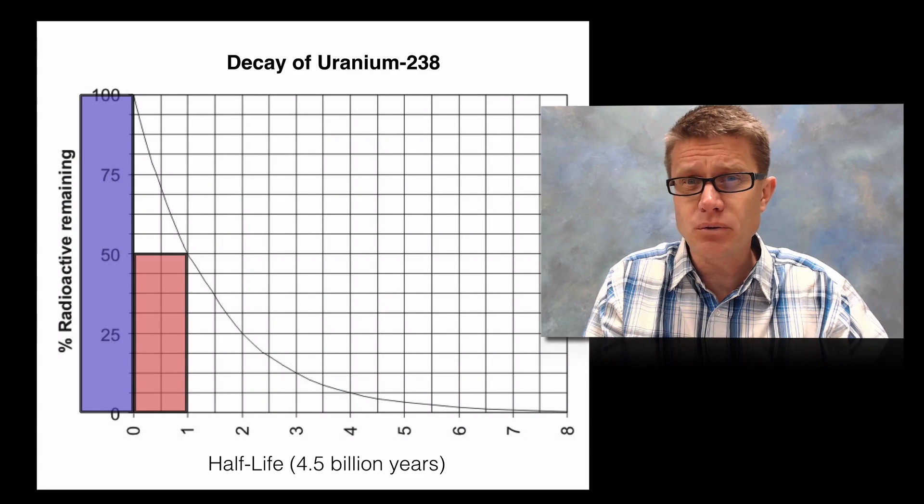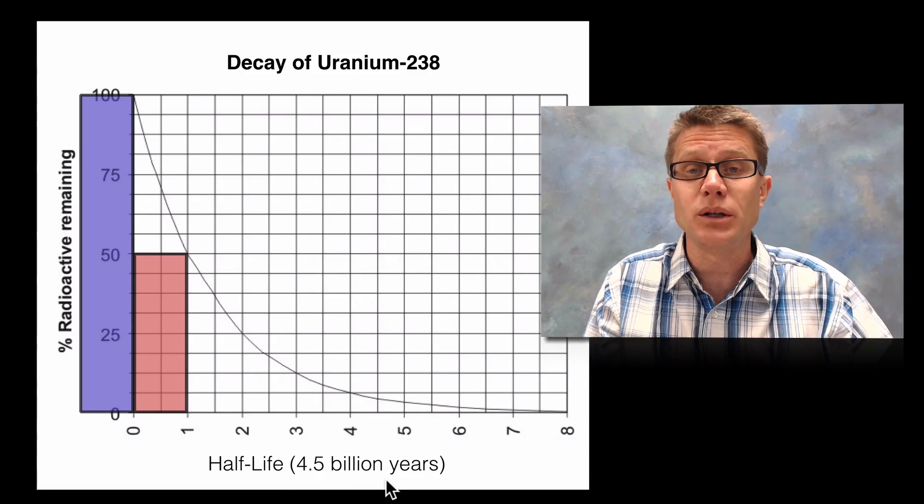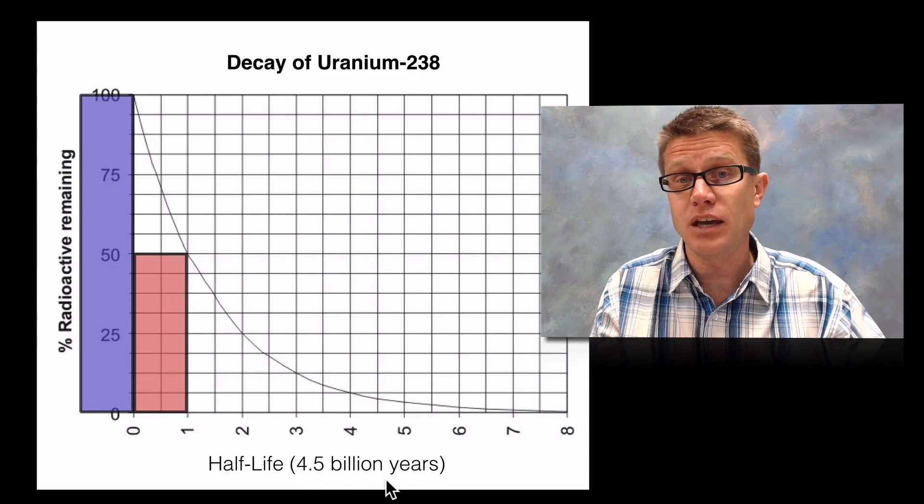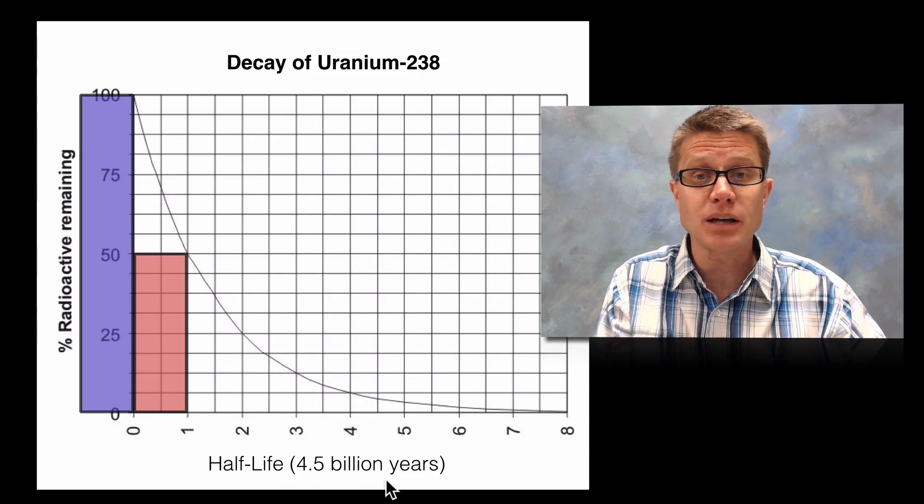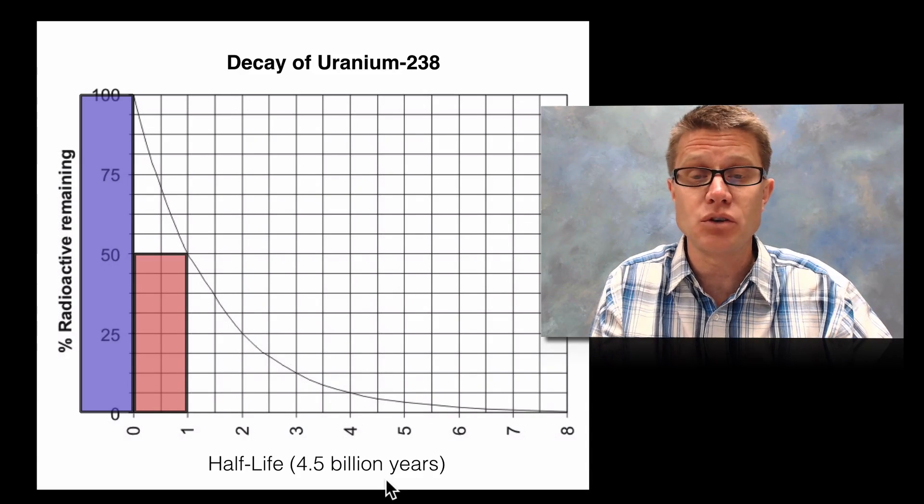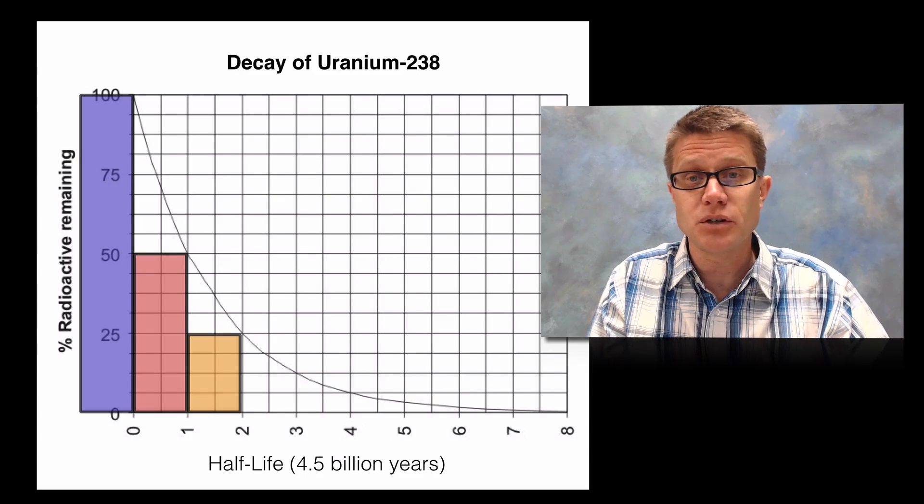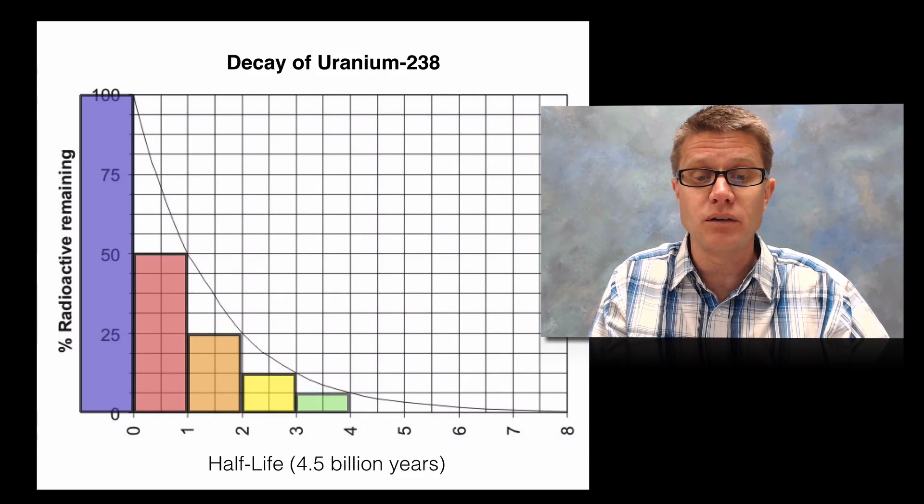Now what is the half life of uranium-238? It is a ridiculously large number. It is 4.5 billion years which is about the same age of our planet. And so we would expect in that first 4.5 billion years we are going to have half of that uranium-238 decay. In the next 4.5 billion years we will go from 50% to 25% and then to 12.5.